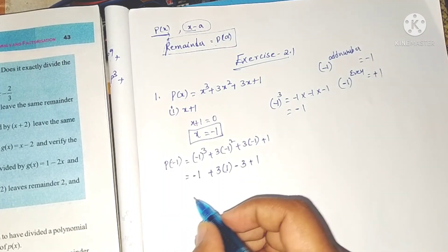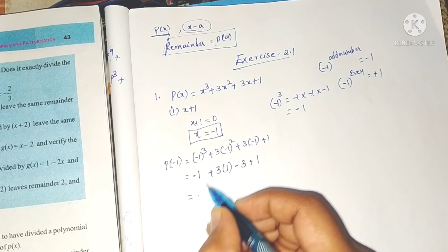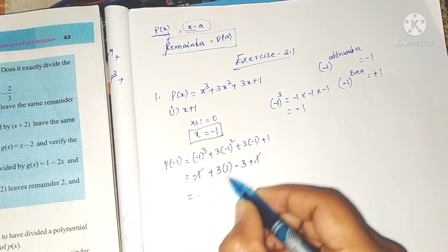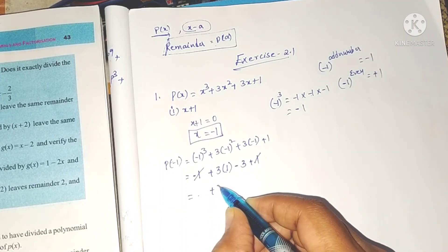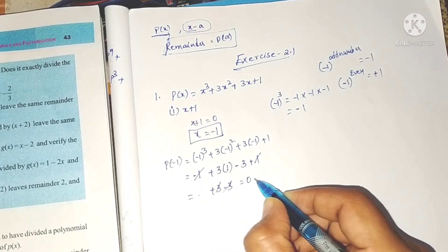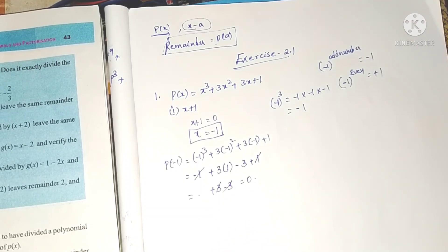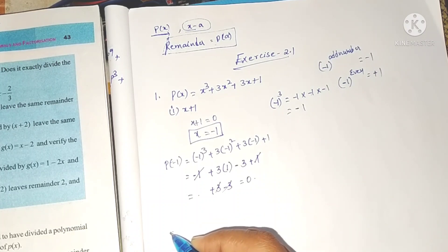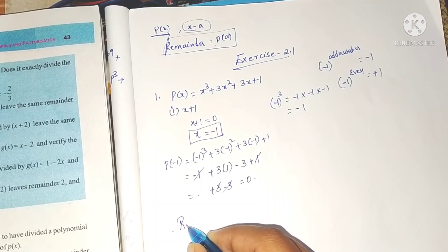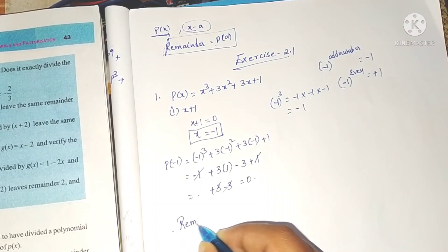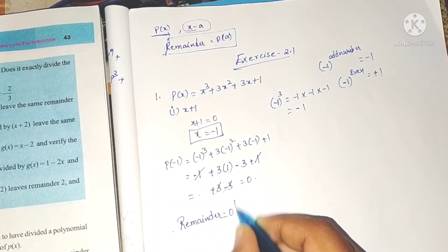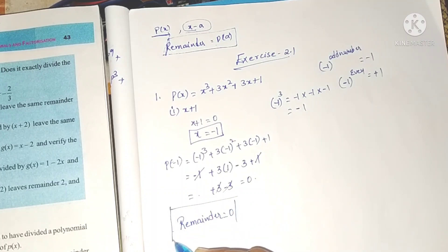So we get: -1 + 3(1) + 3(-1) + 1, which gives -1 + 3 - 3 + 1. The -1 and +1 cancel, and the +3 and -3 also cancel. So the result is 0. The remainder is equal to 0.